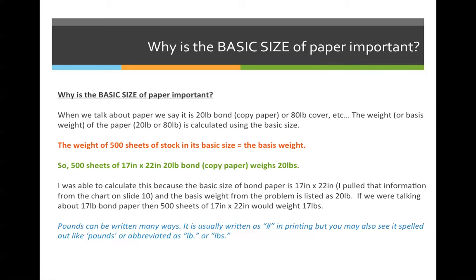The way that we identify this is: the weight of 500 sheets of stock at its basic size is the basis weight of the paper. So if a mill is manufacturing paper and the standard size is 25 by 38, if they take 500 sheets of 25 by 38 and weigh it, whatever it weighs is the basis weight of the paper.